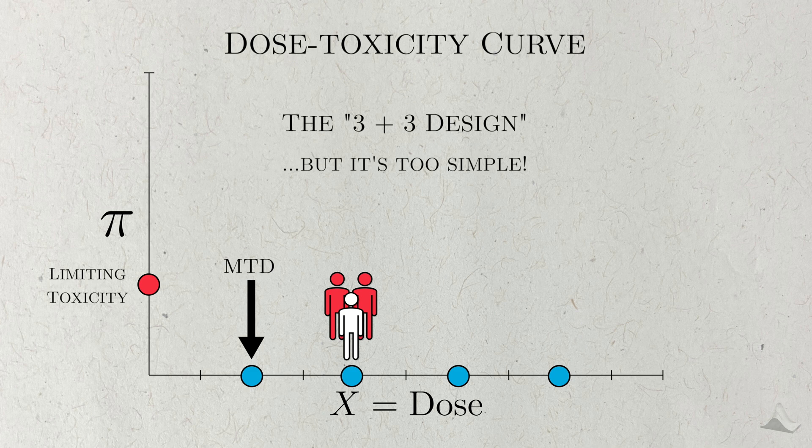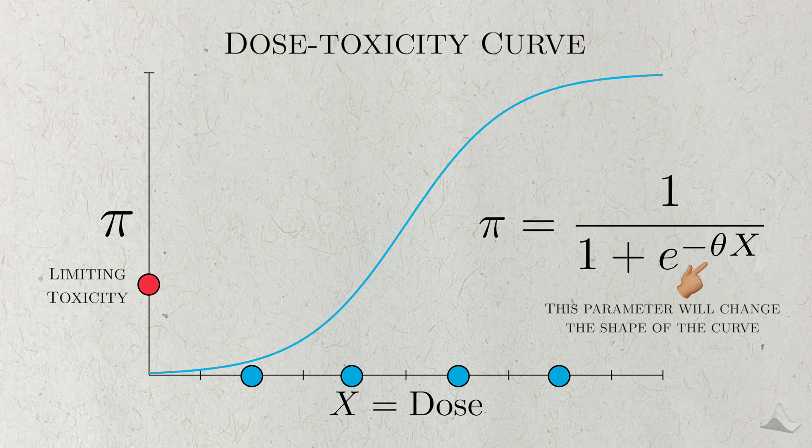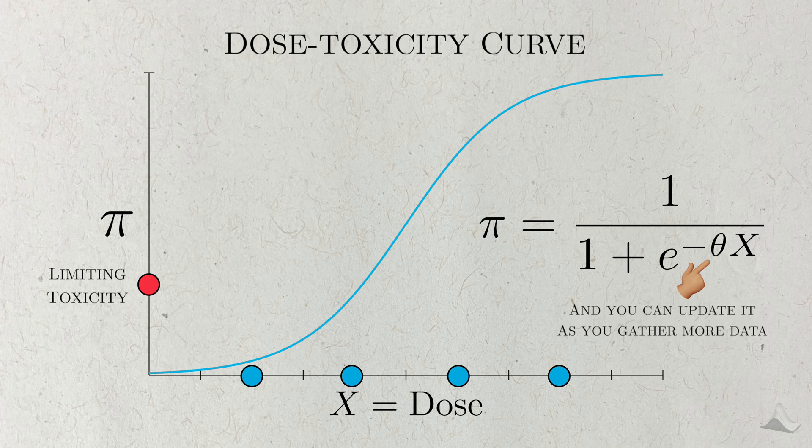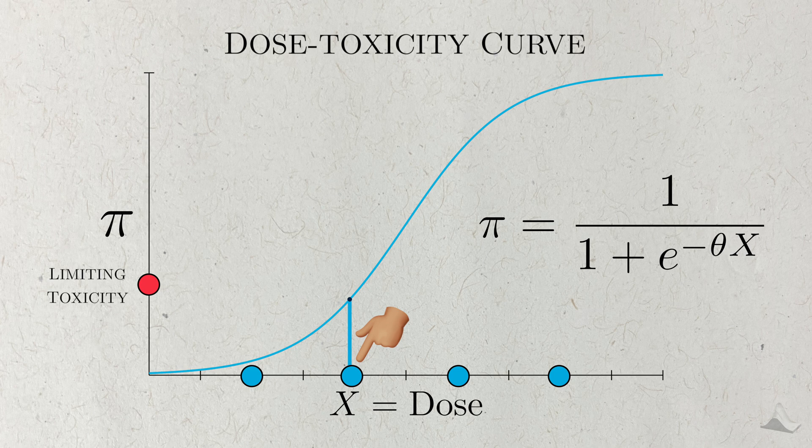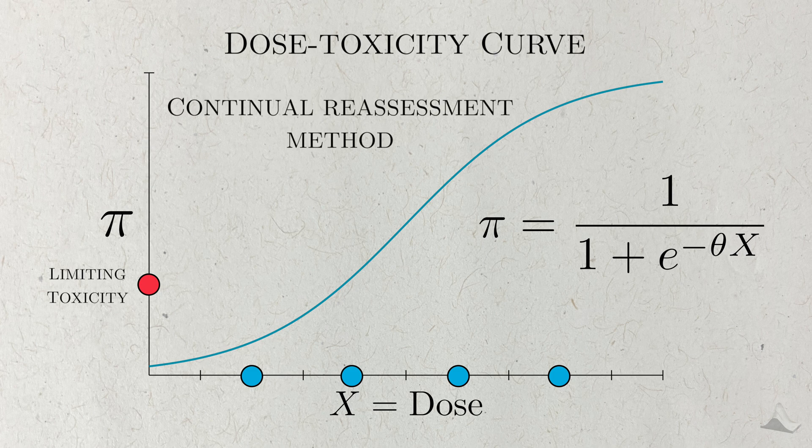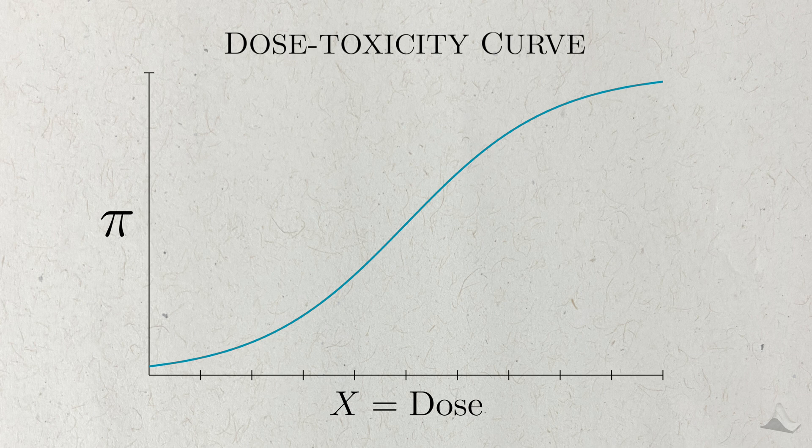Other phase 1 designs try to model the dose-toxicity curve with a known parametric function. The value of the parameter for this function will change the shape of the curve, and you can update it according to incoming data. This is a model-based design as opposed to the rule-based design in 3 plus 3. Using this model, you can choose the dose that's closest to your desired toxicity rate. After you observe your data, you can update the shape of the curve and repeat the process. This is also known as the continual reassessment method, or CRM. 3 plus 3 and CRM represent some simple designs for phase 1 trials.